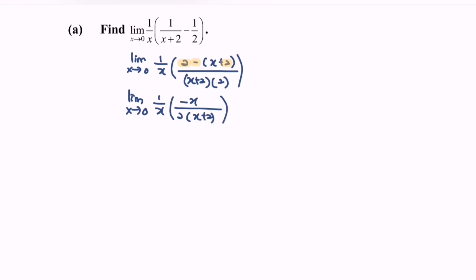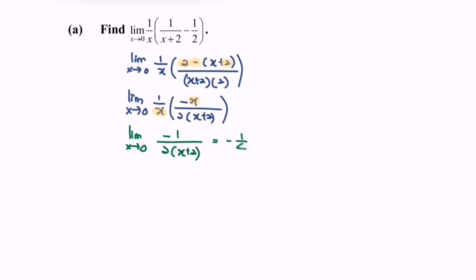Notice that we have common terms, so we can simplify. The limit when x approaches 0 becomes negative 1 over 2(x plus 2). Kindly substitute the value 0 and we obtain negative 1 over 4.